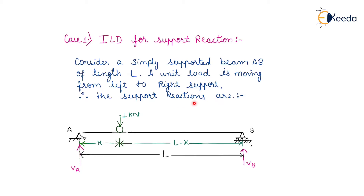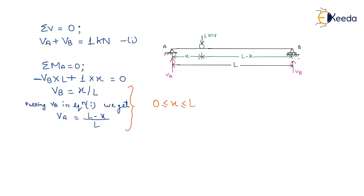For finding the support reaction, we need to use the equilibrium condition — that is, summation of all the forces in the vertical direction equals zero. We write summation of V equals zero. VA and VB are the reactions acting in the upward direction, and the 1 kN load is acting in the downward direction. So the equation becomes: VA plus VB equals 1 kN.